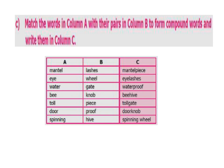When she finally stepped into the courtyard, she was received with a big hug by her kind aunt. She was in time to join the gentle folk at the village for a sing-song. Match the words in column A with their pairs in column B to form compound words and write them in column C. For example: mantelpiece, eyelashes, waterproof, beehive, tollgate, doorknob, spinning wheel.